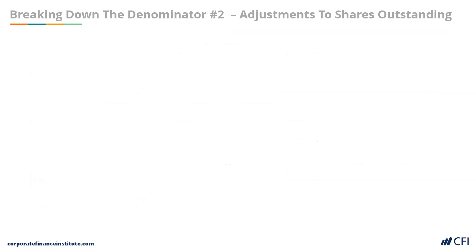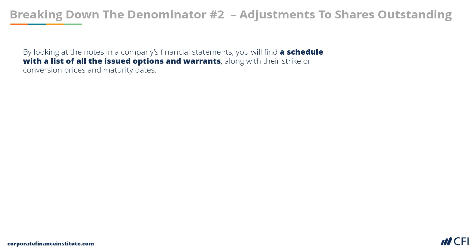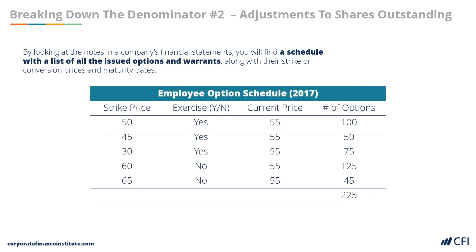But how do we calculate the number of shares converted from dilutive securities? By looking at the notes in the company's financial statements, you will find a schedule with a list of all the issued warrants and options, along with their strike price or conversion prices and maturity dates. A good financial analyst will recreate a table in Excel with all the details, then compare the strike or conversion prices to the current share price or average share price over the period, and determine which securities are in the money.